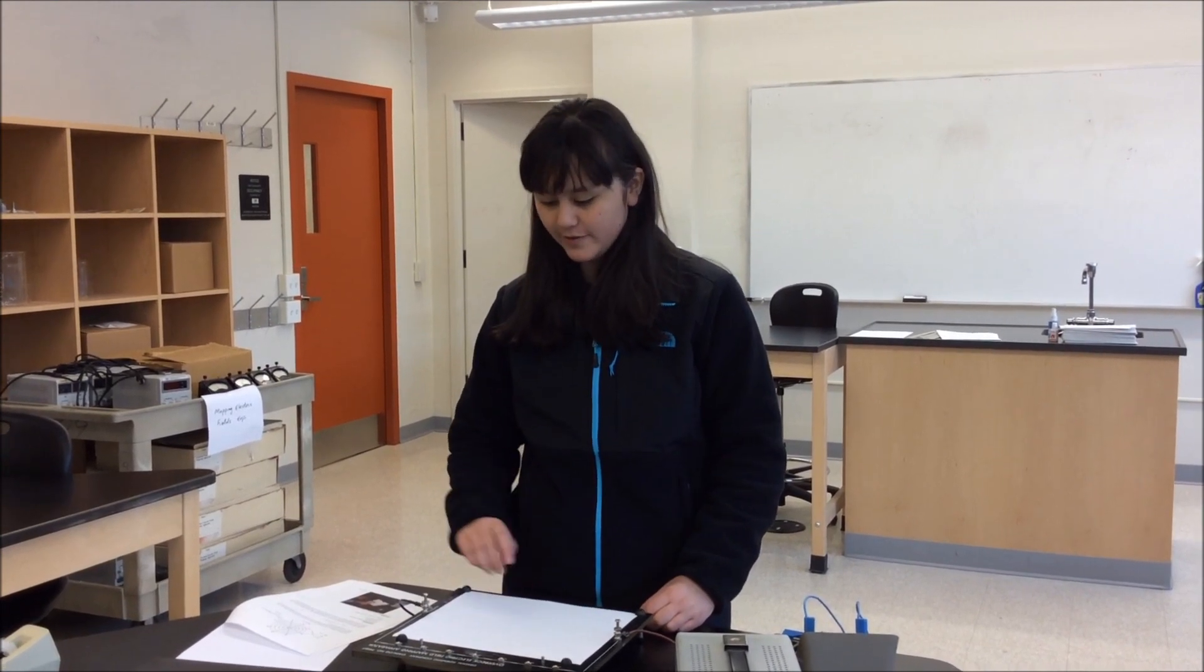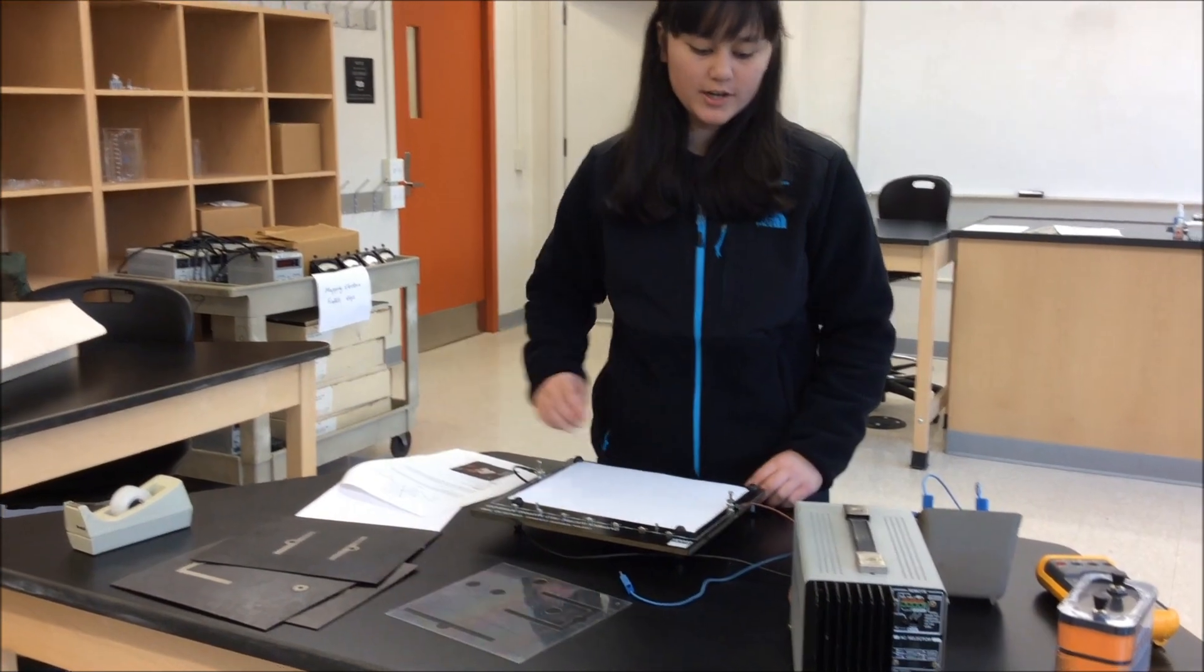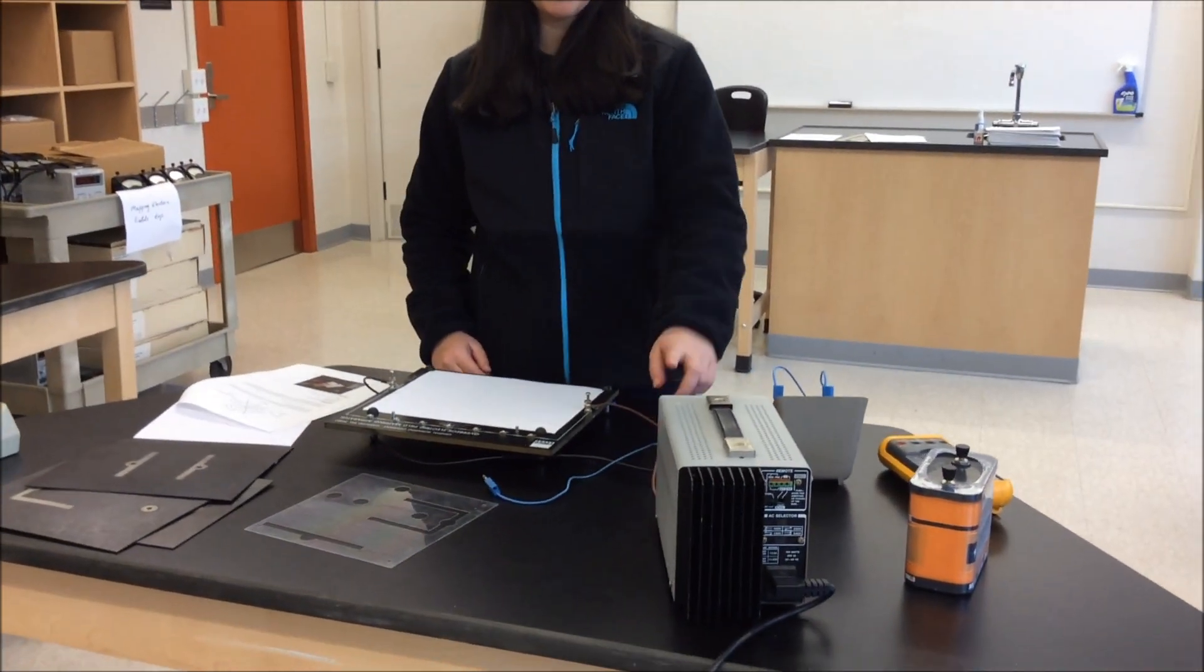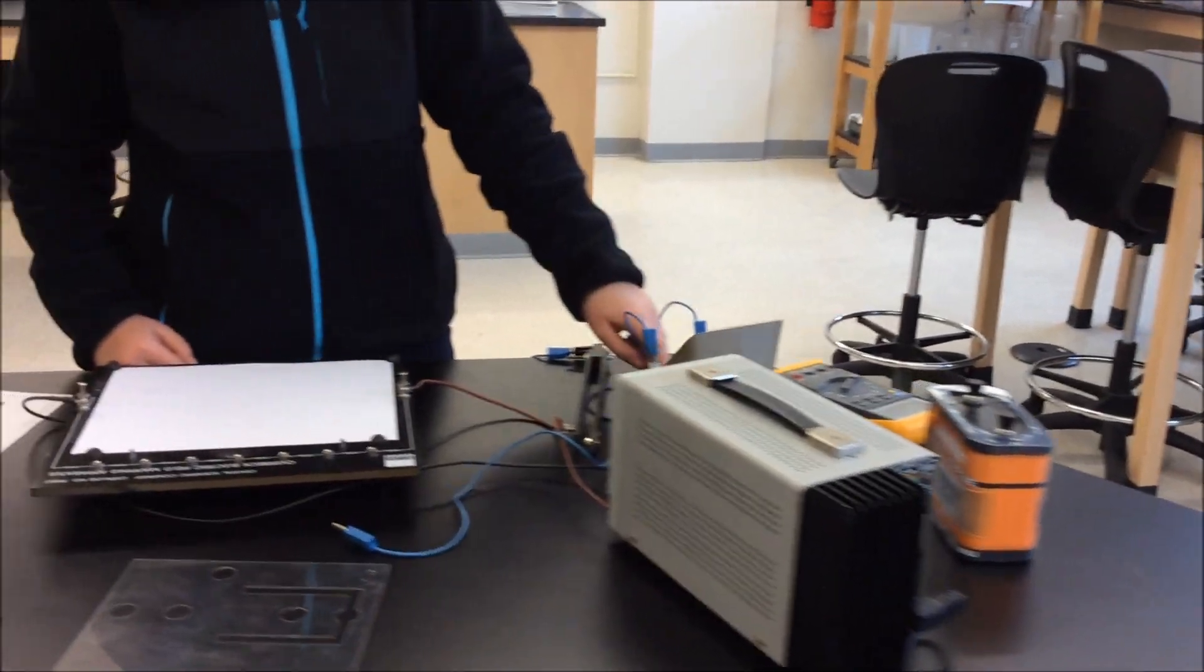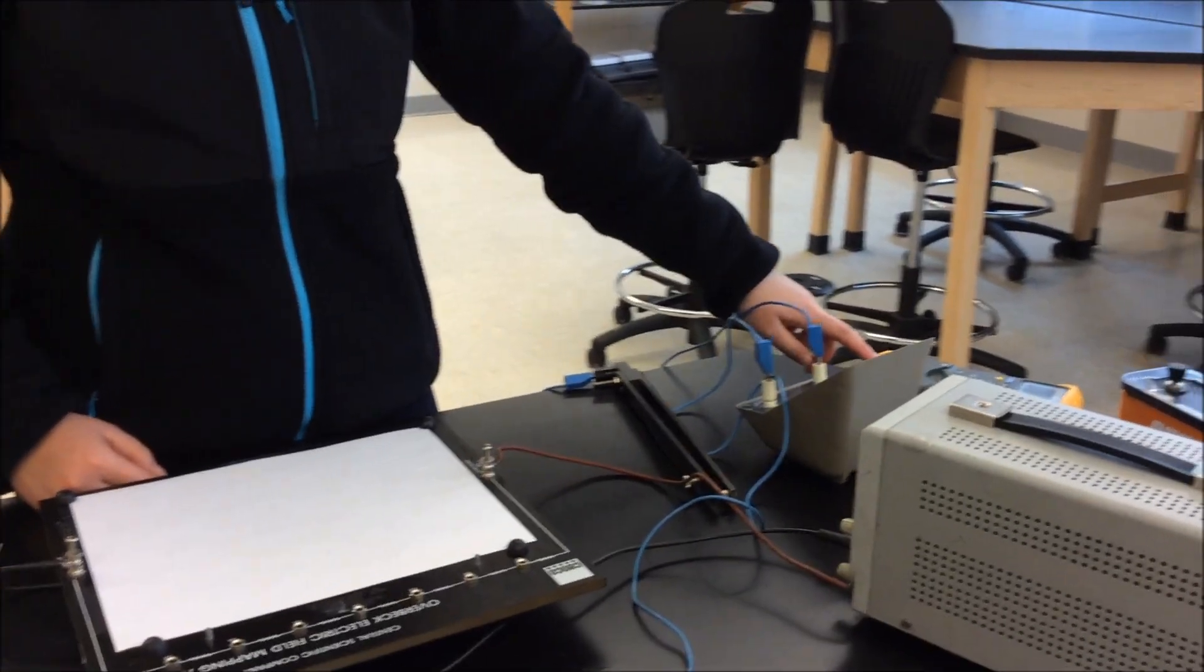What you're going to need for this lab is the electric field mapping apparatus and different shapes of electrodes. You're going to need connecting wires, a power supply, or instead of a power supply you can use a 6 volt battery, a galvanometer, or instead you can use a voltmeter.